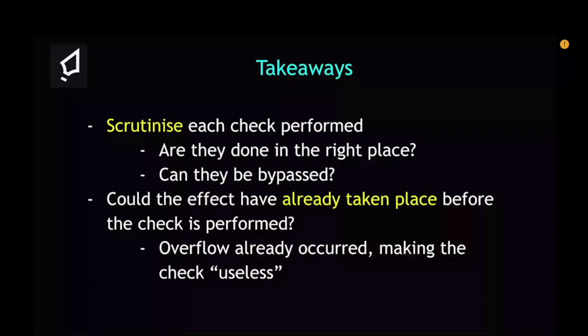There's a relation here to zero-knowledge proofs worth pointing out. With ZK proofs, you are typically checking a bunch of constraints, and you should ask yourself whether it's possible for those constraints to be violated before the checks are performed. This isn't just related to ZK — when doing invariant checking in general, consider whether it's possible to violate those constraints before verification.